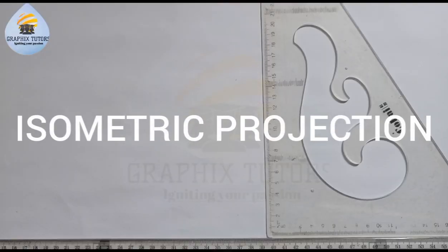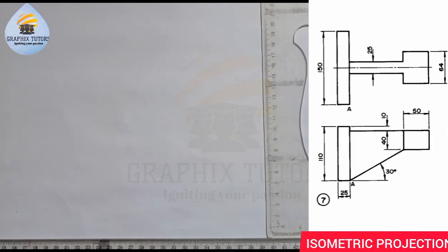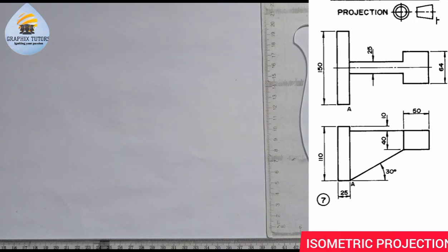Good everyone, my name is Graphics. If you look at the right-hand side of the screen, you see two given views — the plan and the elevation of a given figure — and we are told to draw the isometric projection of these given views. The views are in third angle projection, as suggested by the question, meaning that the top is the plan and the bottom is the front elevation.